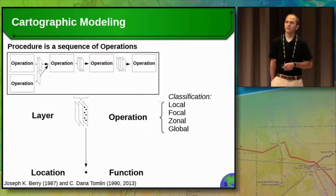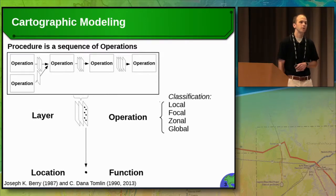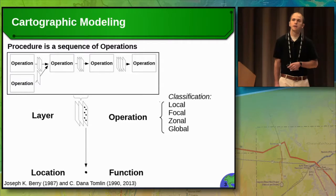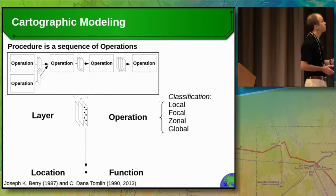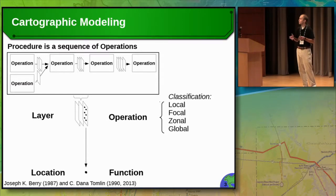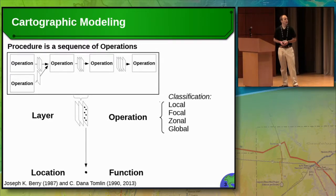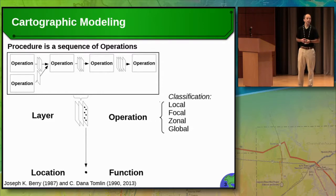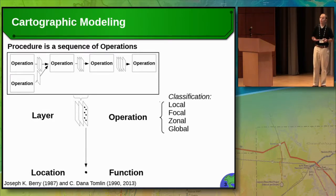To get started, I want to give a little background on cartographic modeling, especially for our computational science friends in the audience. This conceptual framework was introduced by C. Dana Tomlin in the late 80s and early 90s. It captures a framework for spatial data processing, starting with a procedure — a sequence of operations. Computational scientists would call this a workflow. Operations input and output map layers, generally 2D rasters, but could also be points or polygons. Operations can be classified as local, focal, zonal, or global, describing the spatial extent when calculating a location within a layer.